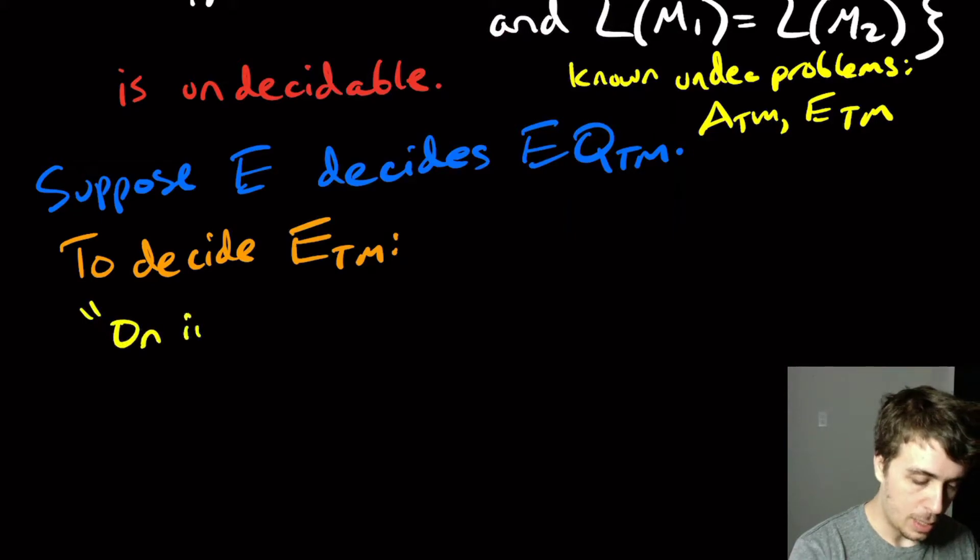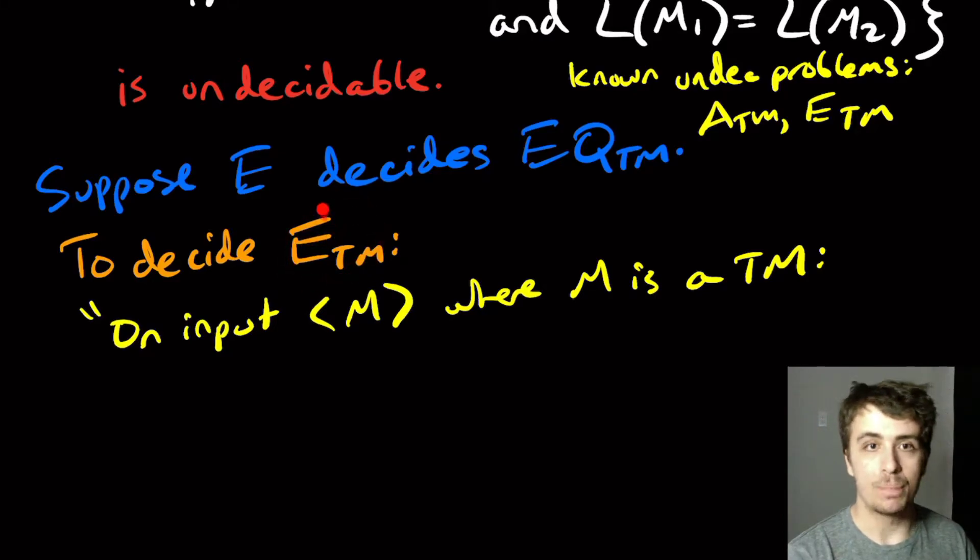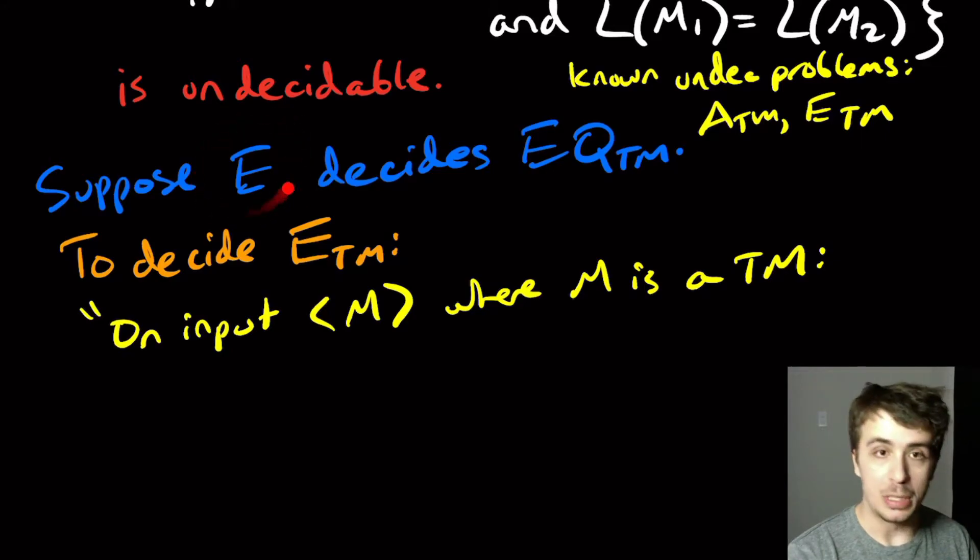On input M, where M is a Turing machine, we're trying to decide the emptiness problem now, assuming that the equivalence problem is decidable. What we need to do is feed in two Turing machines to this decider E.